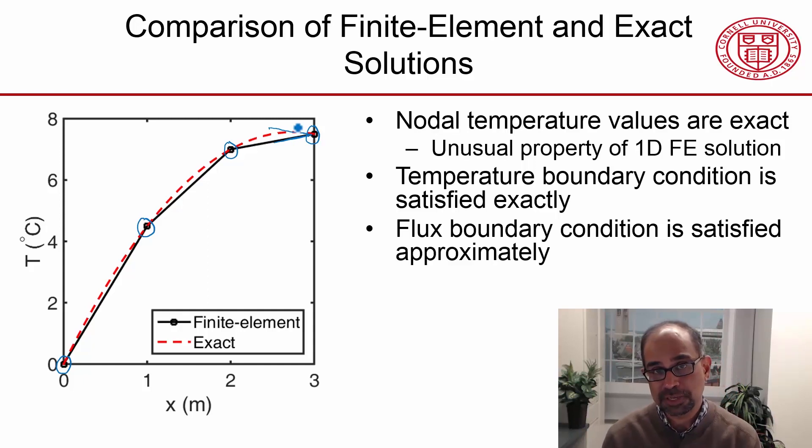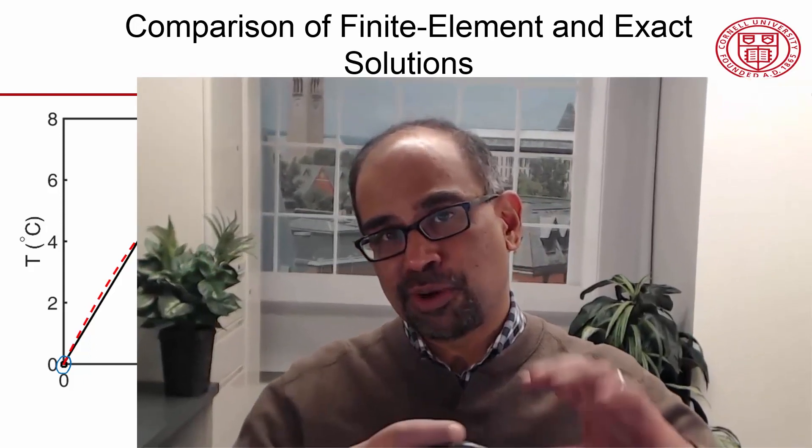So the flux that we specify is not satisfied exactly, and that's usually the case. Whatever you have as a gradient boundary condition like the flux, that's going to be satisfied approximately. The natural boundary condition is satisfied approximately. The essential boundary condition is satisfied exactly.